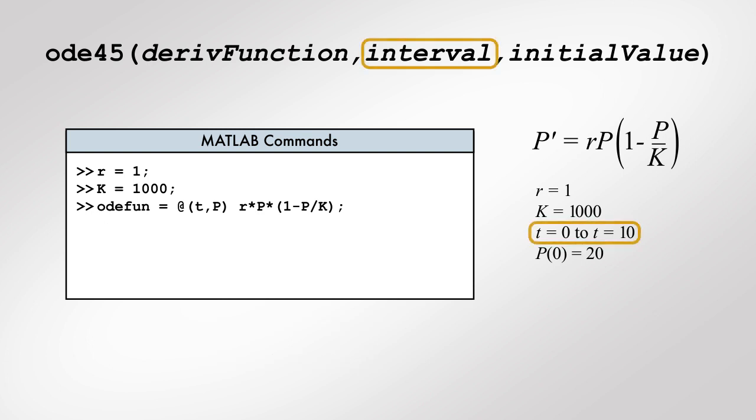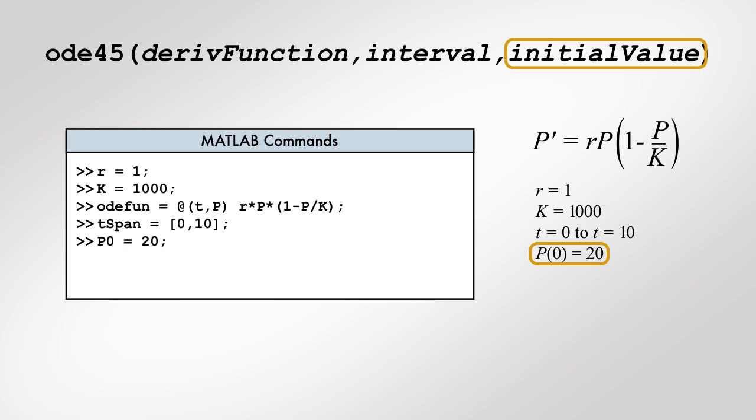Next, let's define the solution interval as a 1 by 2 vector that specifies the start and end values for T, and then create a variable for the initial value of P.